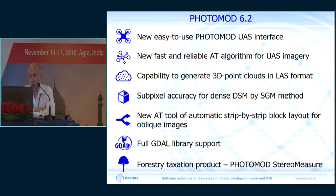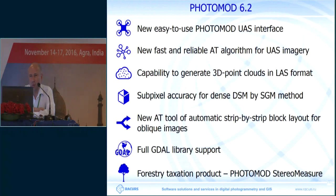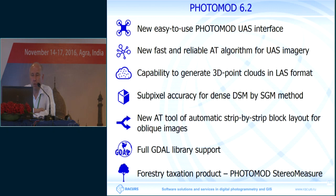We have changed the algorithm of referencing the points that we acquire from the UAV images. It can also be done for oblique image acquisition, and we have tested it. Now we are building 3D point clouds as the output product. We build a digital elevation model, a dense digital surface model. As a result, we get not only the altitude matrix but also the cloud, and it is fully painted and colored — we take colors from the source images, which leads to a photorealistic view.